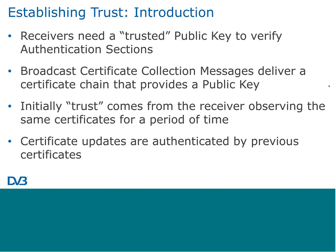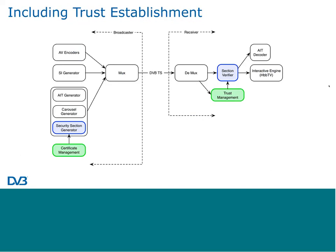This starts with the receiver observing the certificates in a broadcast for a suitable length of time to be convinced that it's a real transmission, not a brief attack by a hacker. Certificates can be updated because they are introduced by their predecessors. The green blocks in the diagram represent the trust establishment addition. On the left is certificate management, creating certificates and new key pairs of private and public keys, which can be done offline. You only need to change keys infrequently — perhaps every few months. At the receiver end, the trust management function sits alongside the section verifier and provides it with a trusted public key.